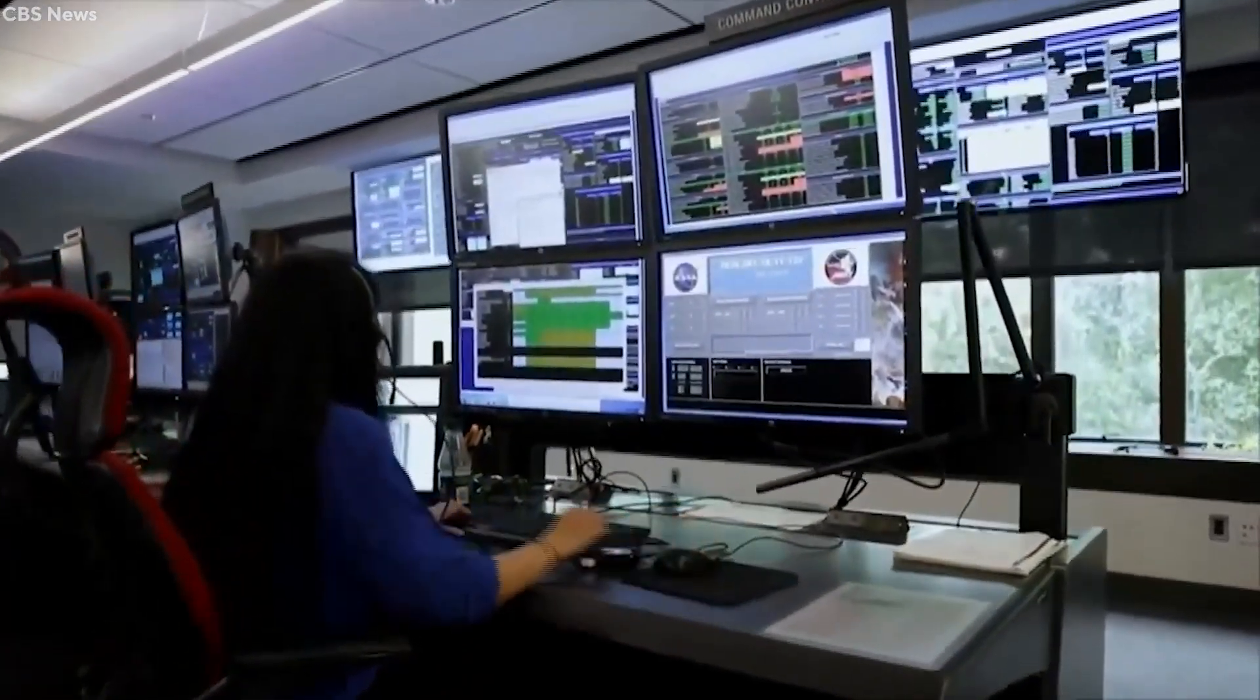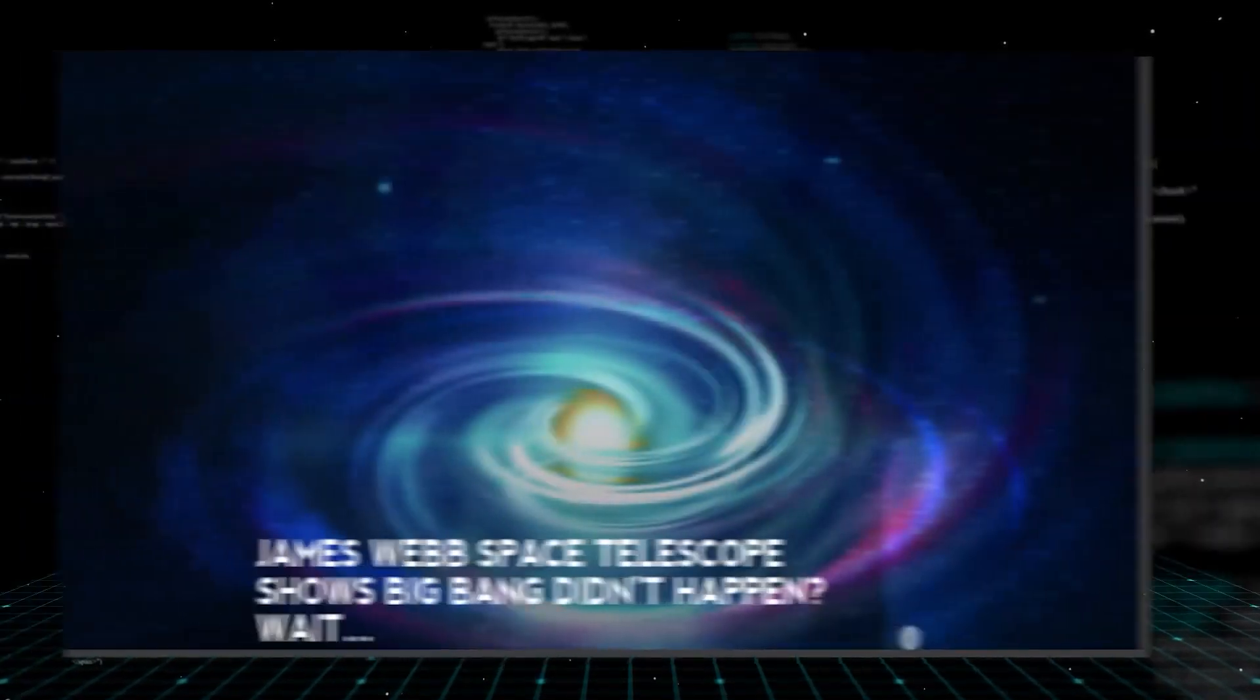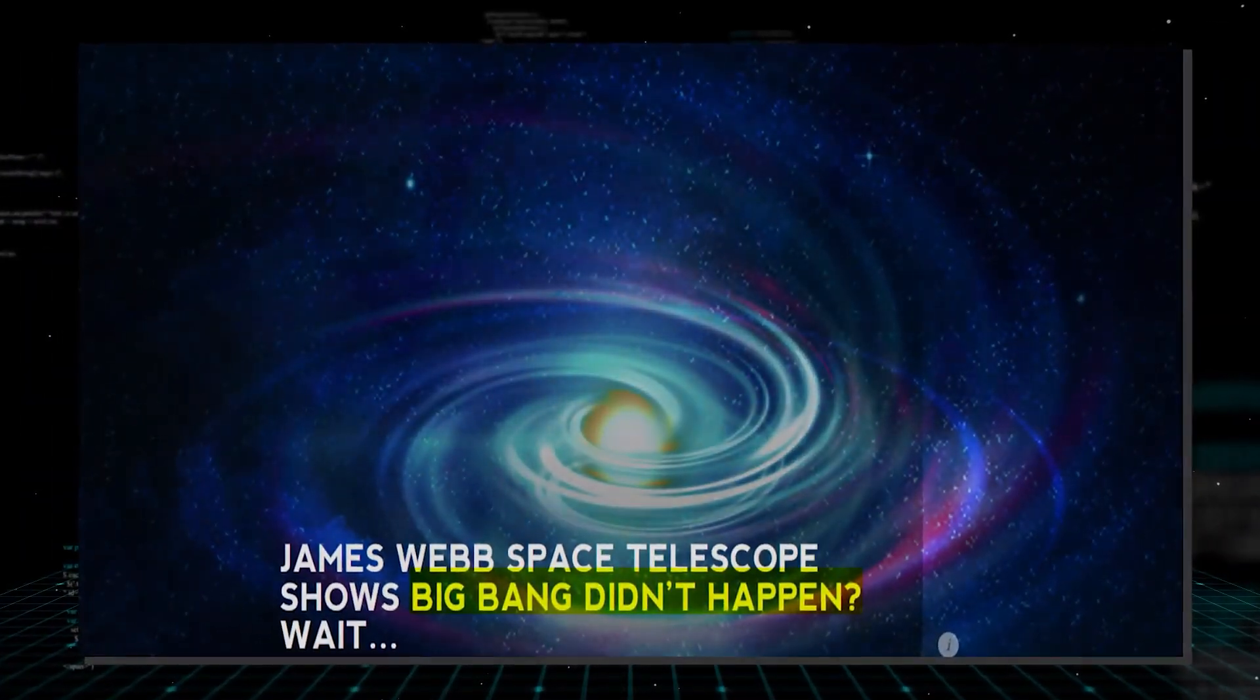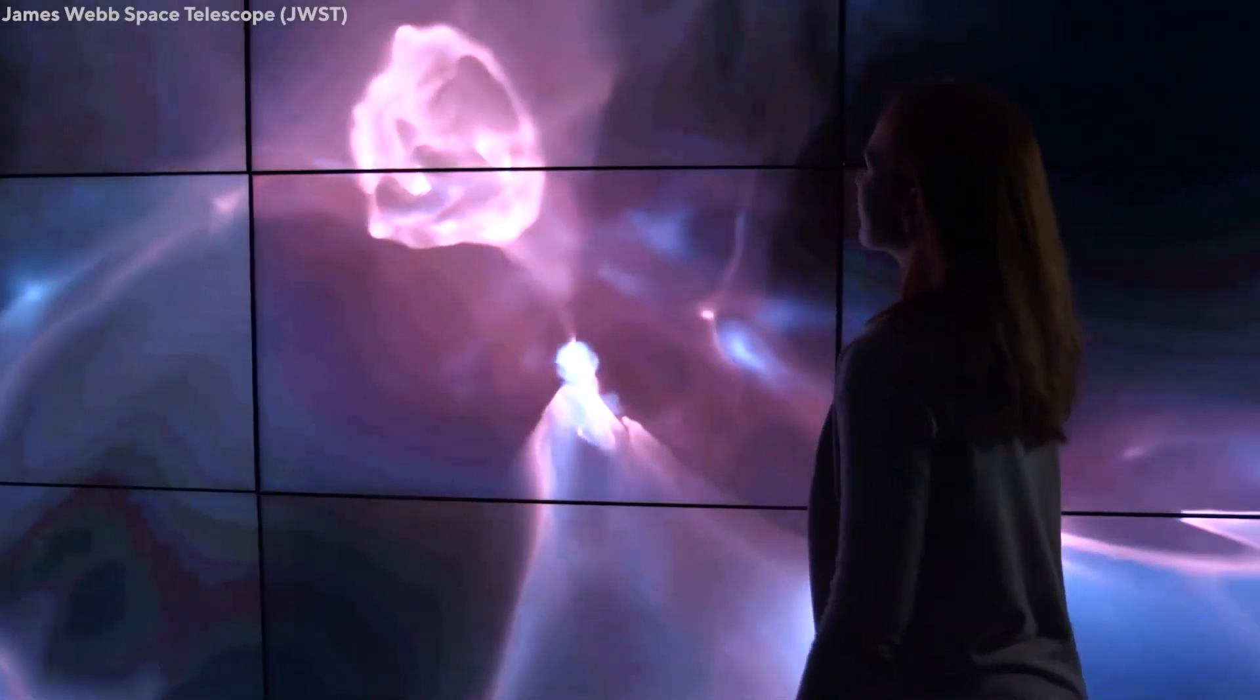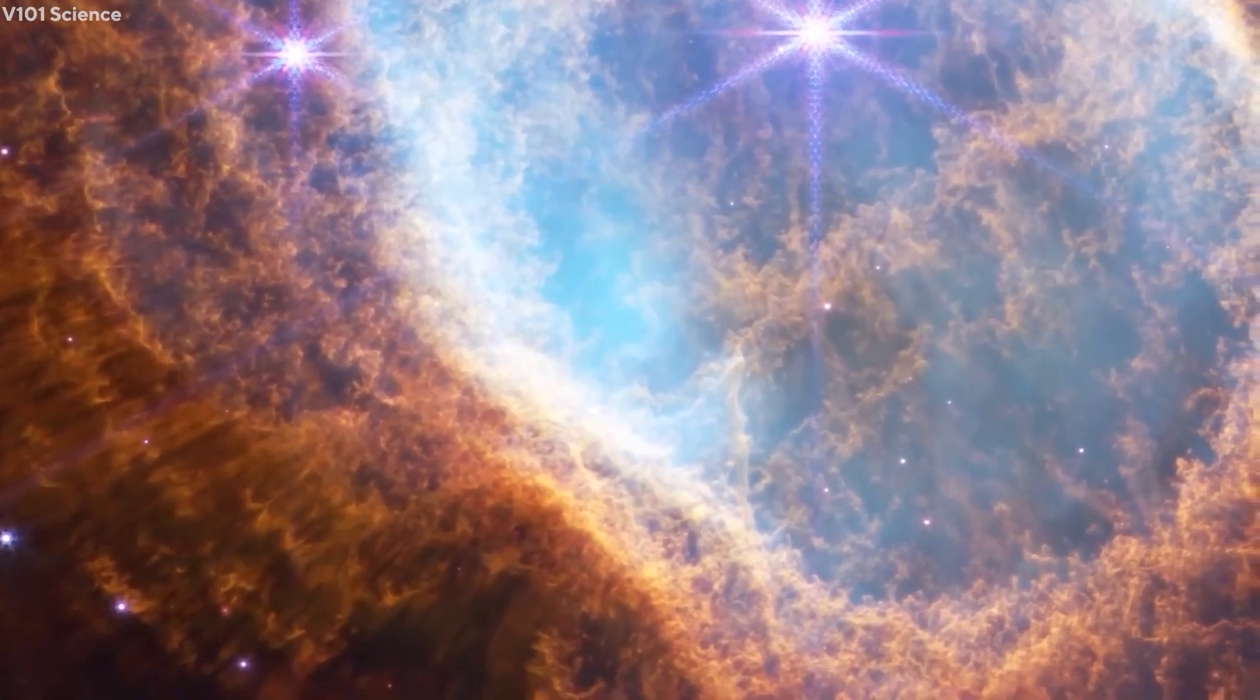Although the James Webb Space Telescope has only been conducting science operations for a few months, it has already made some iconic discoveries, including the detection of what could be some of the earliest galaxies ever seen, that existed just 200 million years after the Big Bang.